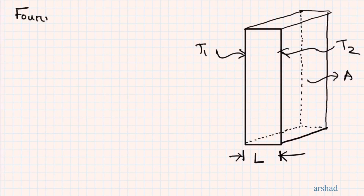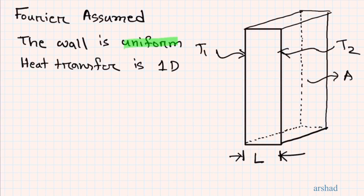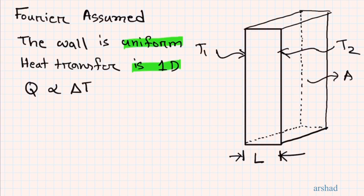Fourier's law helps us calculate the amount of heat transferred through a material by conduction, but it requires two assumptions. First, the wall or material has to be uniform — if it's made of brick, it's only brick; if copper, only copper. Second, heat transfer can only be in one direction, meaning in any other direction in 3D you have negligible heat transfer.